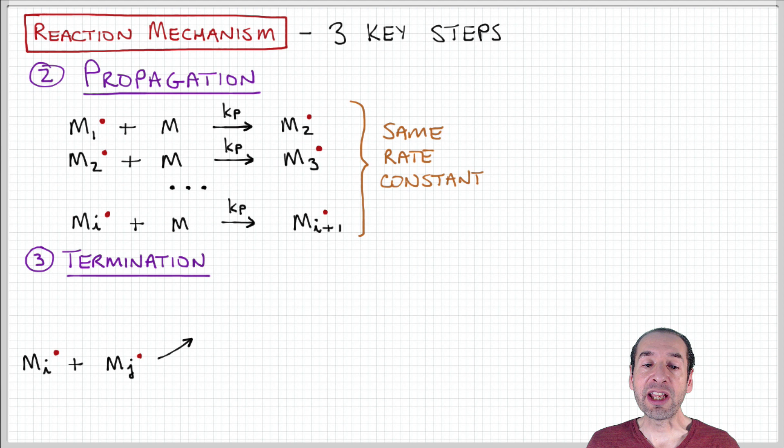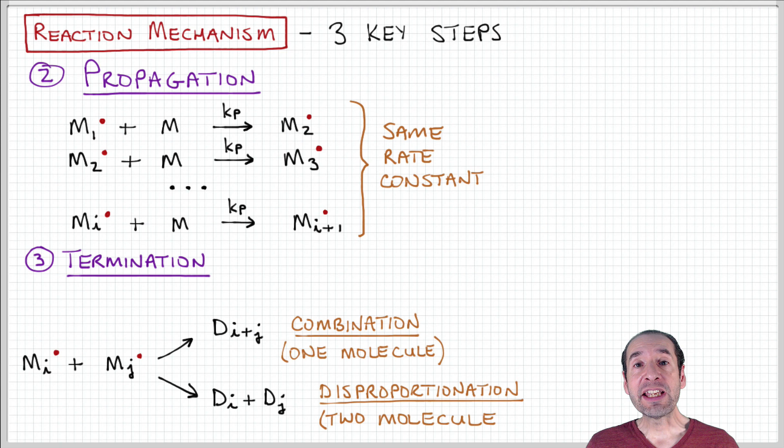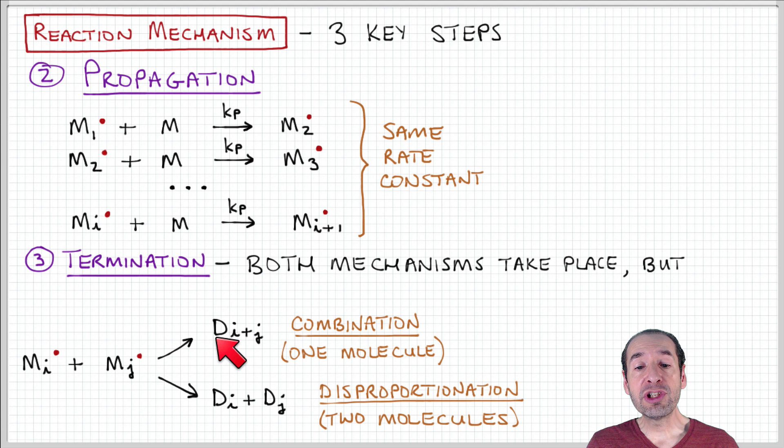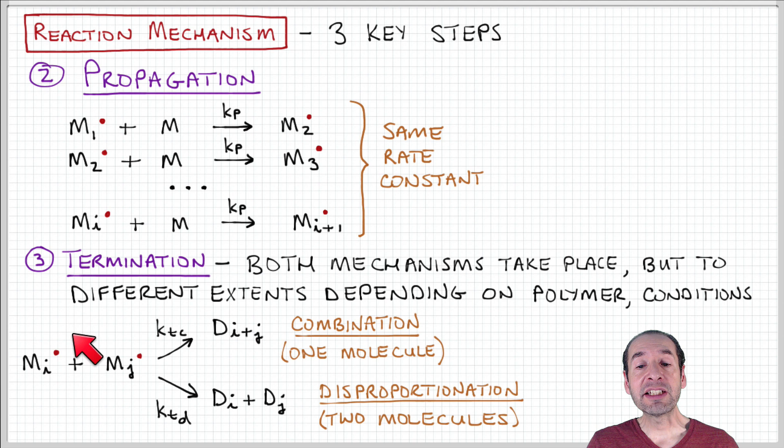Termination is the third step in the process. So this deals with transfer of the radical away from the growing or active chain to form inactive polymers or what we call dead polymer. And this can happen in two different ways. So one way is that each active chain experiences a transfer of the radical away so that it becomes inactive or dead.